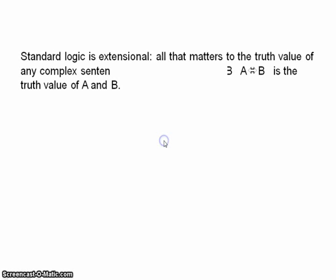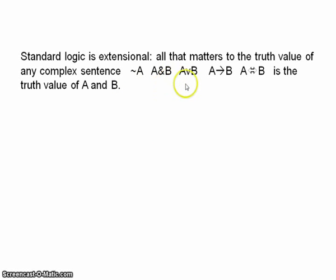We saw how, in standard logic, all that matters to the truth value of any complex sentence is the truth value of its parts. All that matters to the truth value of, say, A and B is the truth value of A and the truth value of B. That's it. So that's a feature that will be shared by any extensional system.